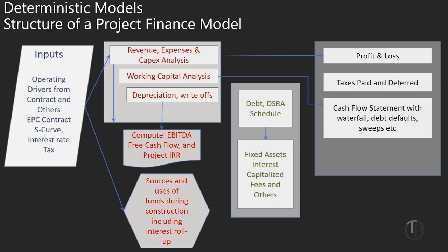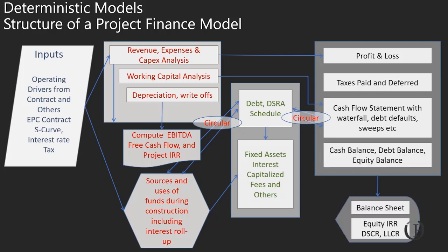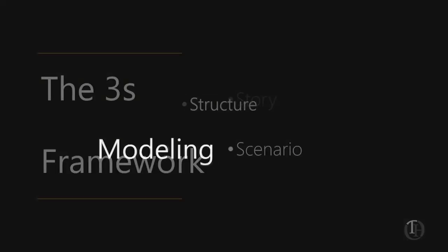Fixed assets, capitalized interest, fees, and others are all part of it. You have your sources and uses of funds. Because of how cash comes in and out, there's going to be circular reference — another circular reference from your outputs around cash on interest. This drives people nuts if you don't manage it properly. At the end of the day, you have your balance sheet, and that's basically how you build a project finance model. That's Structure — number two.